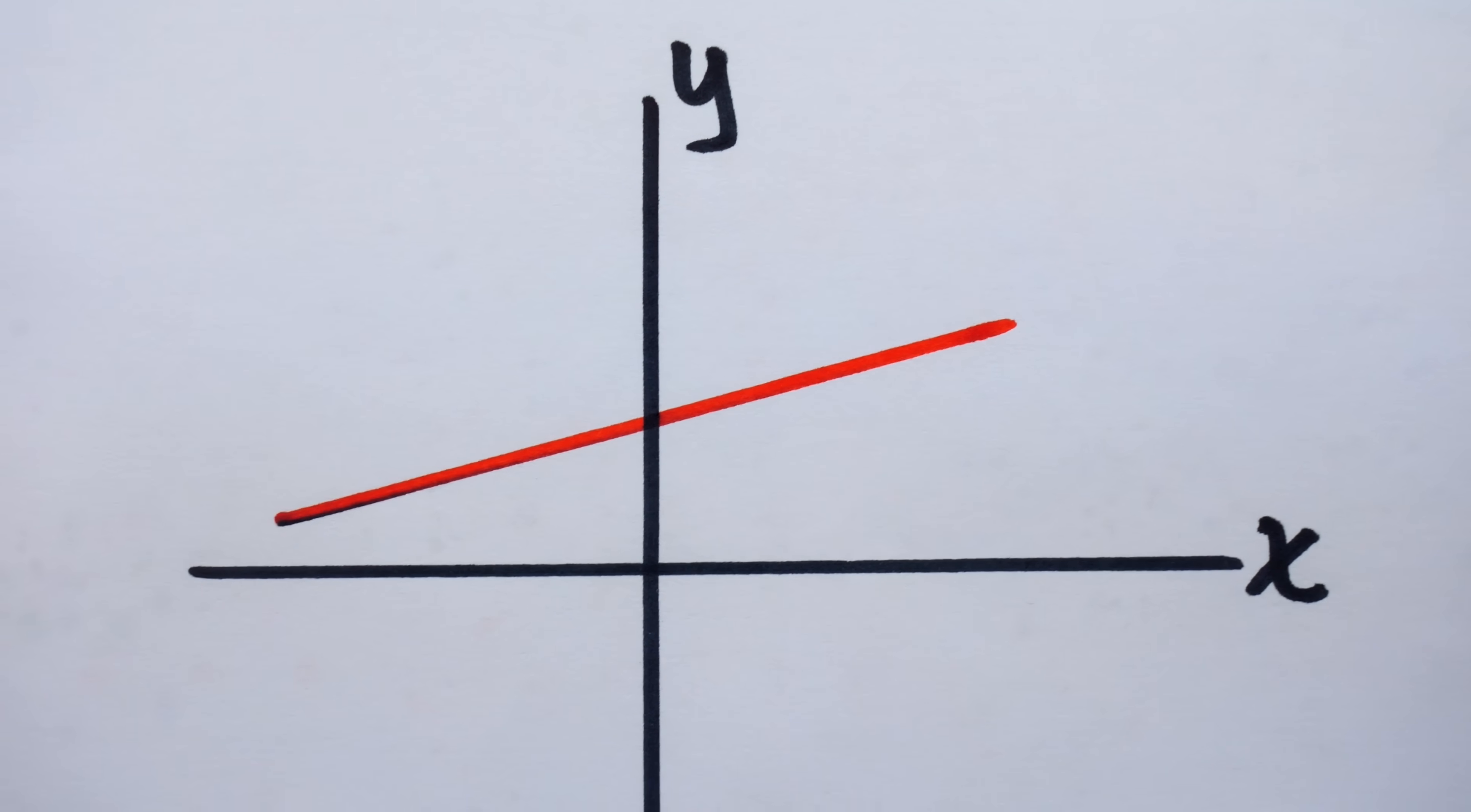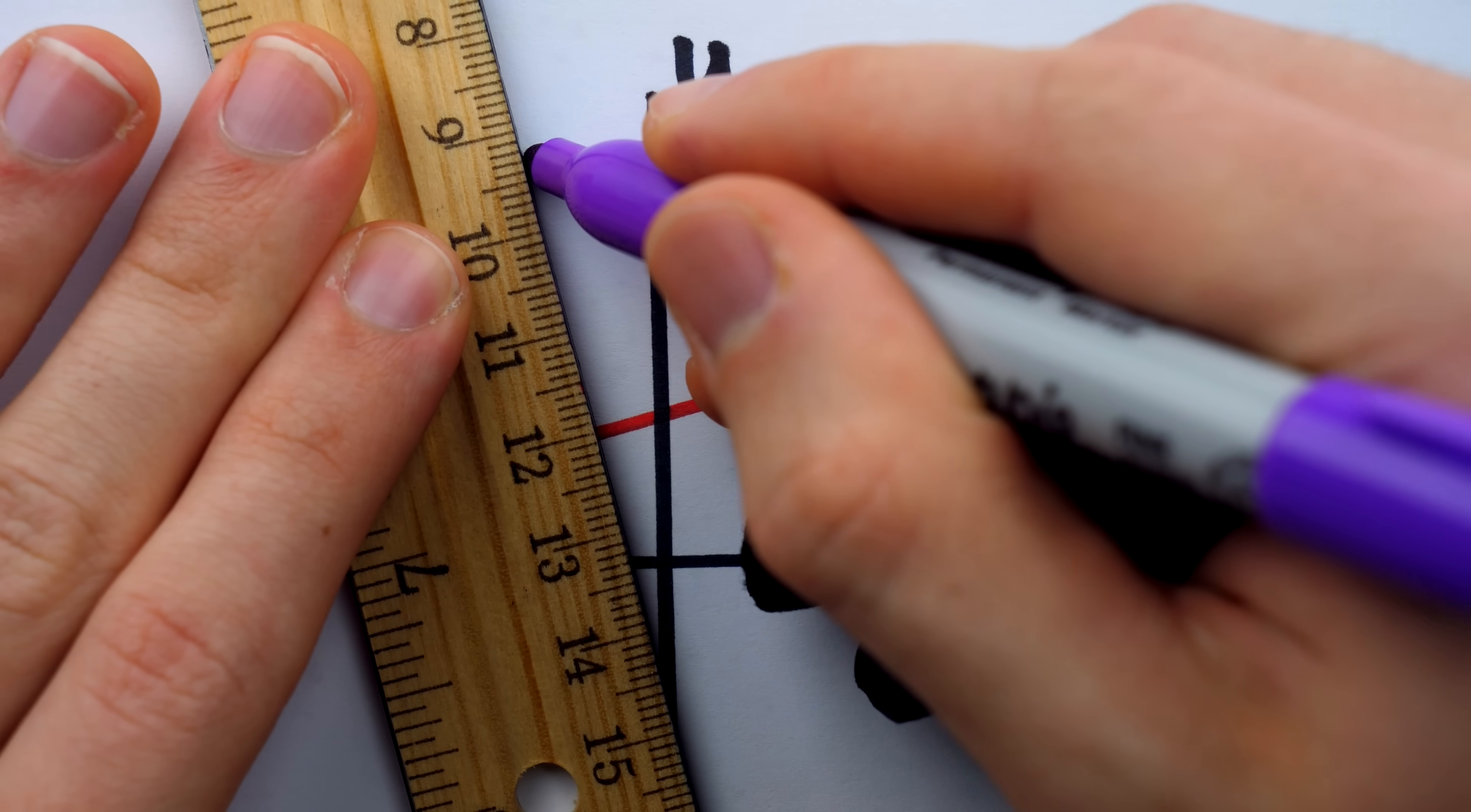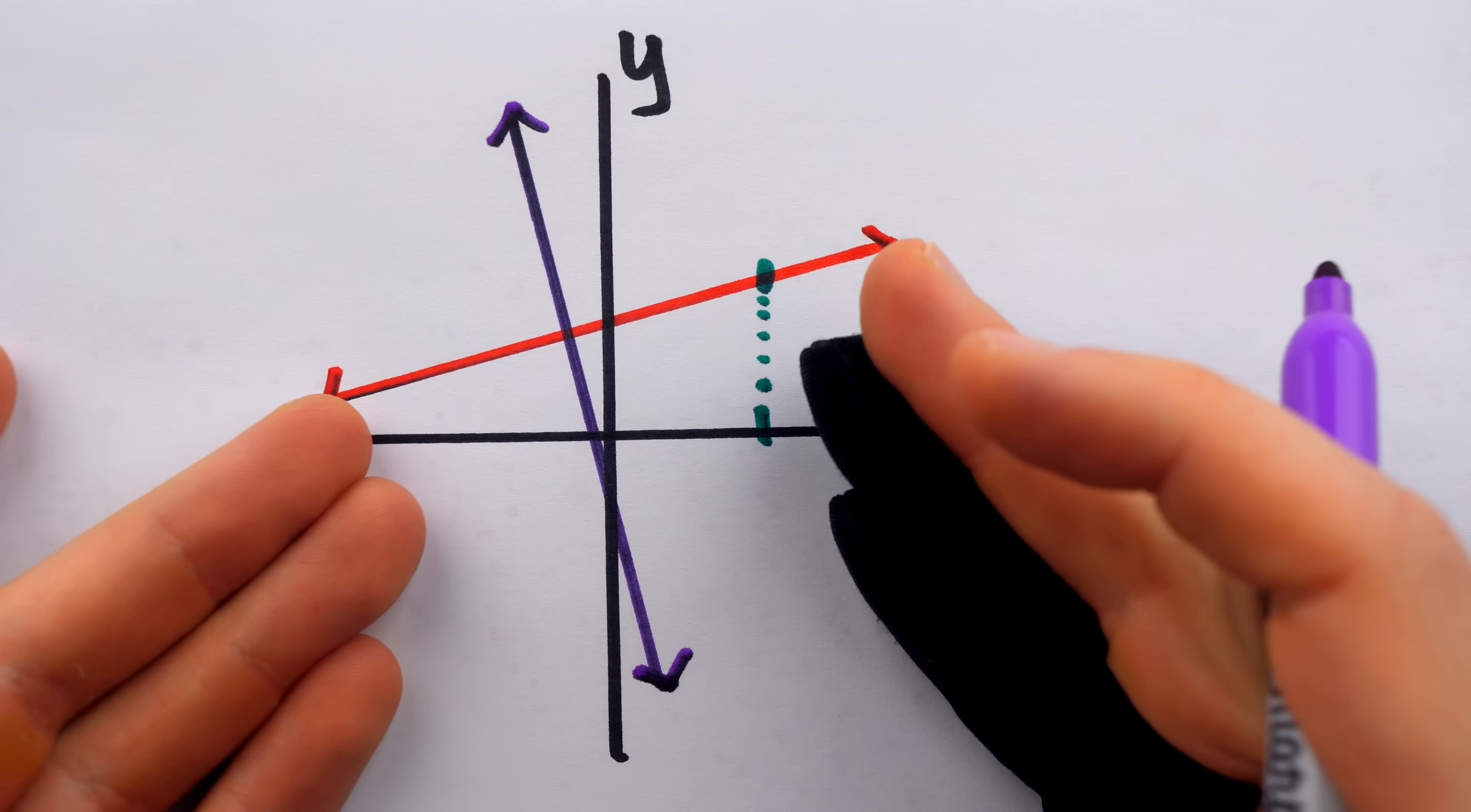It spans the entire x axis, going forever to the left and forever to the right. That means we could plug in any x value we like and get a corresponding y value on the line. If we draw a perpendicular to this line, same thing. It's a bit steeper, but still it goes forever to the left and forever to the right. So indeed, their domains are the same.